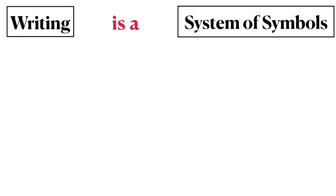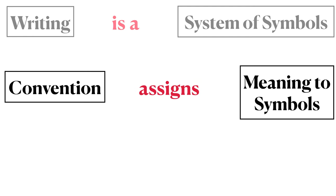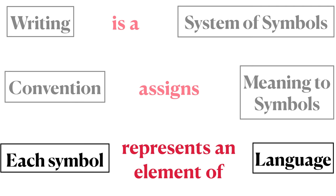Let's review what we've learned. Writing is a system of symbols. Convention assigns meaning to symbols. And in a writing system, each symbol represents an element of language.